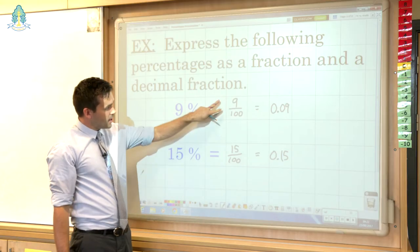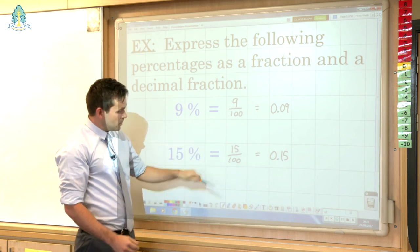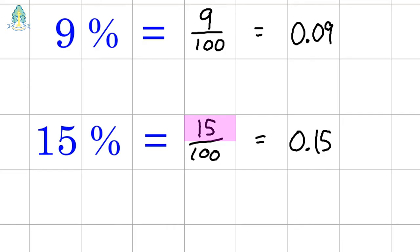Now to go back to simplifying, the first fraction here won't simplify, whereas the second one has a common factor of 5 that we could divide the top and bottom by. If we divide the numerator by 5 we get 3 and the denominator we get 20, which gives us another equivalent fraction for 15%, this time a fully simplified equivalent fraction of 3/20.